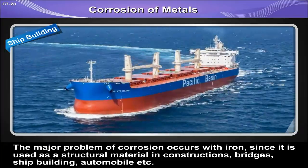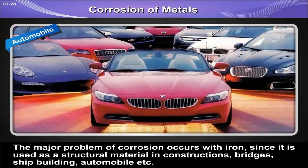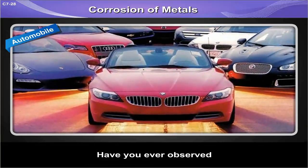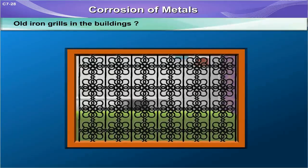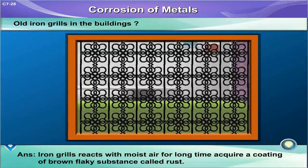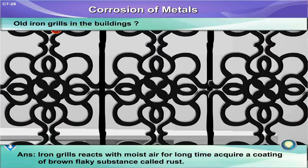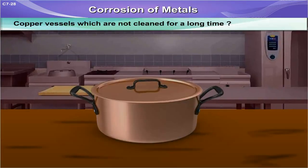Have you ever observed old iron grills in buildings? Iron grills which react with moist air for a long time acquire a coating of a brown flaky substance called rust.